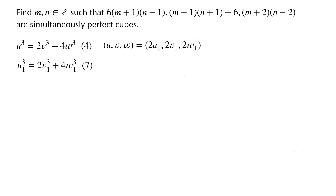We can see that when we set u, v, and w to be 2u₁, 2v₁, and 2w₁ respectively, equation 4 becomes equation 7, and they share the same equation structure. So we can take this process repeatedly.